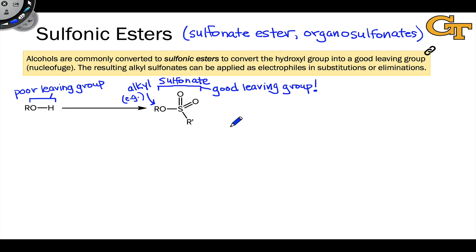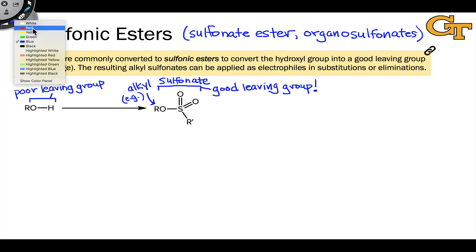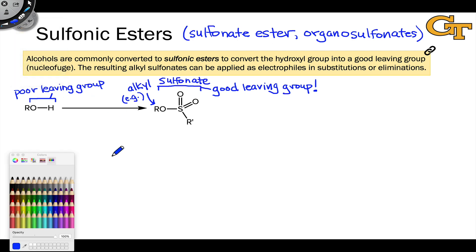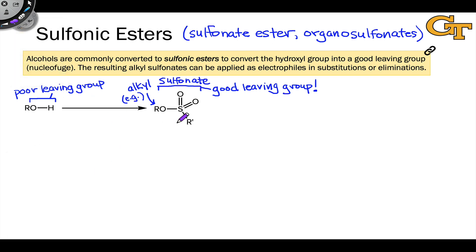For now, I want to focus on the different types of sulfonates and the sulfonate group itself. One thing to point out is that the sulfonate group contains another group inside it. The SO₂R' fragment specifically — just this bit without the former hydroxyl oxygen, without the oxygen linked to R — is referred to as a sulfonyl group.